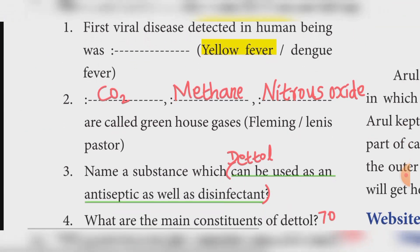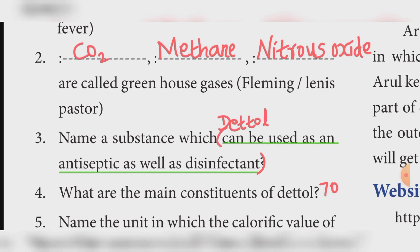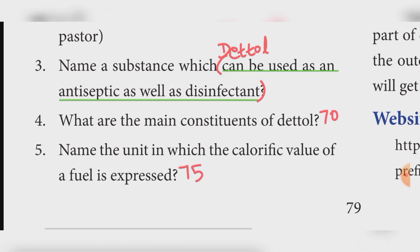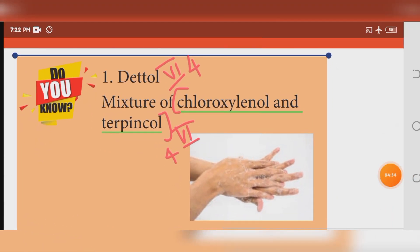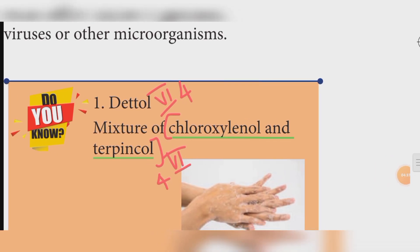Third one: name a substance which can be used as an antiseptic as well as disinfectant. Answer: Dettol. Dettol can be used as an antiseptic as well as a disinfectant. Fourth one: what are the main constituents of Dettol? Refer book page number 70. It is a detector mixture of chloroxylenol and terpineol.